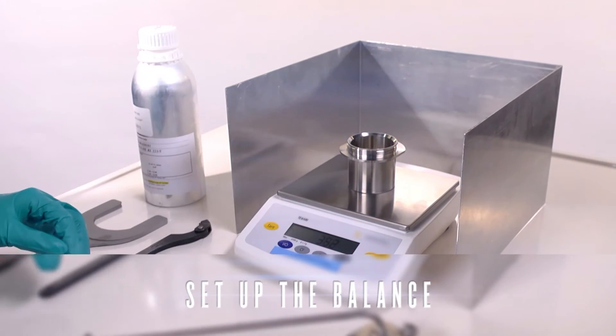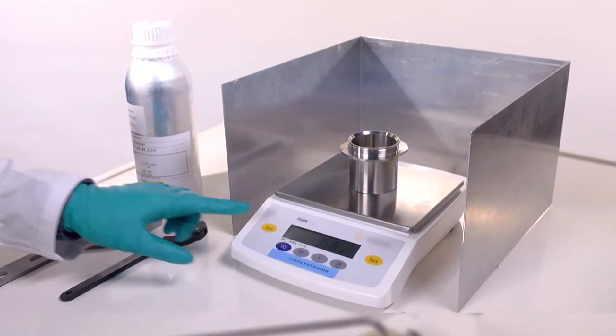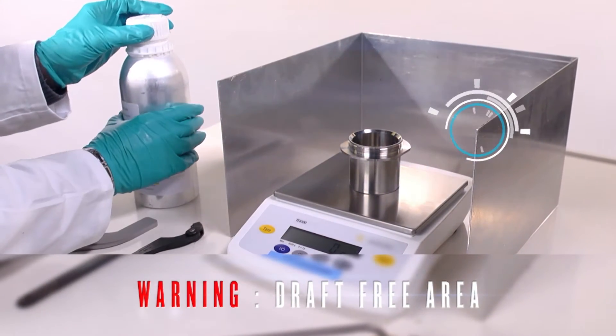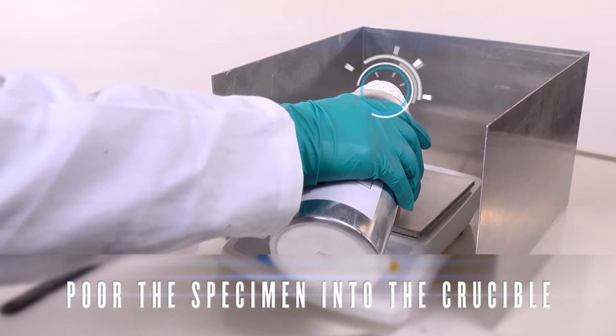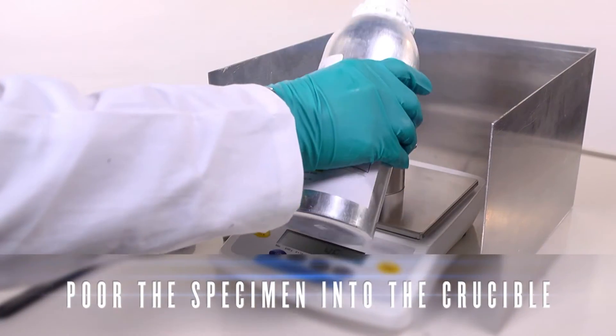Once the verification procedure is complete, set the balance by weighing the empty crucible without its cover. Then pour the test sample into the crucible at the nearest precision requested.